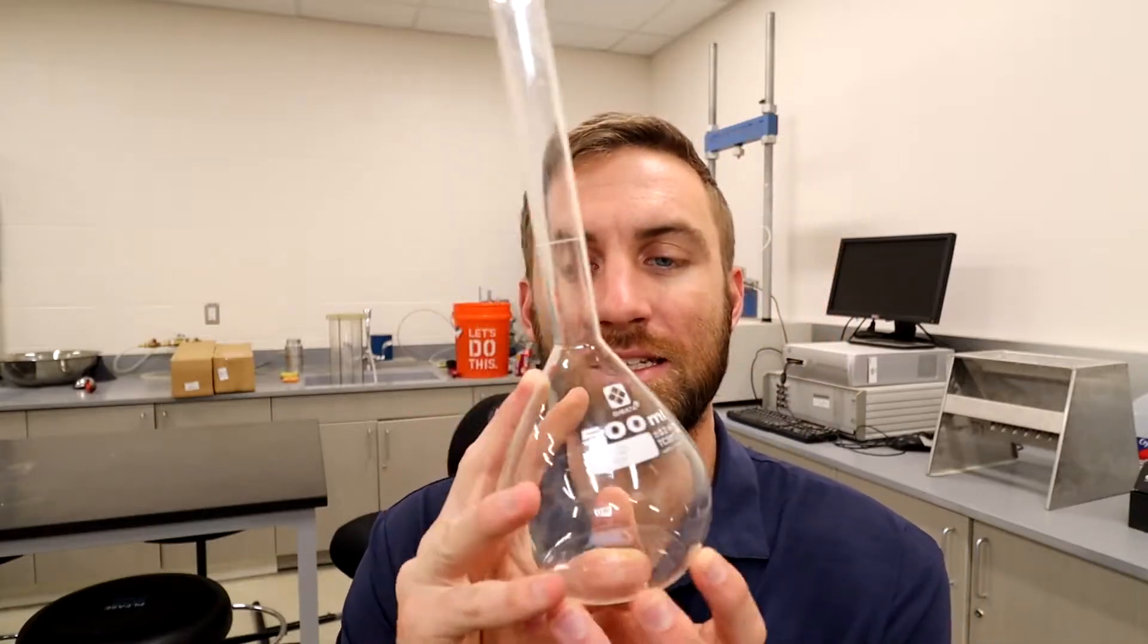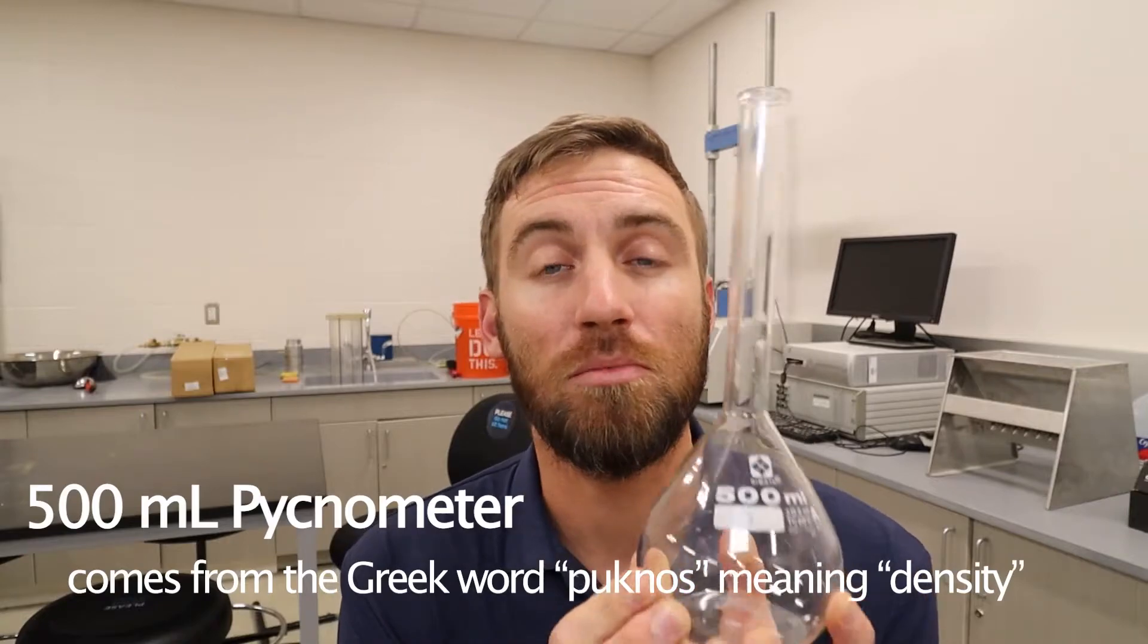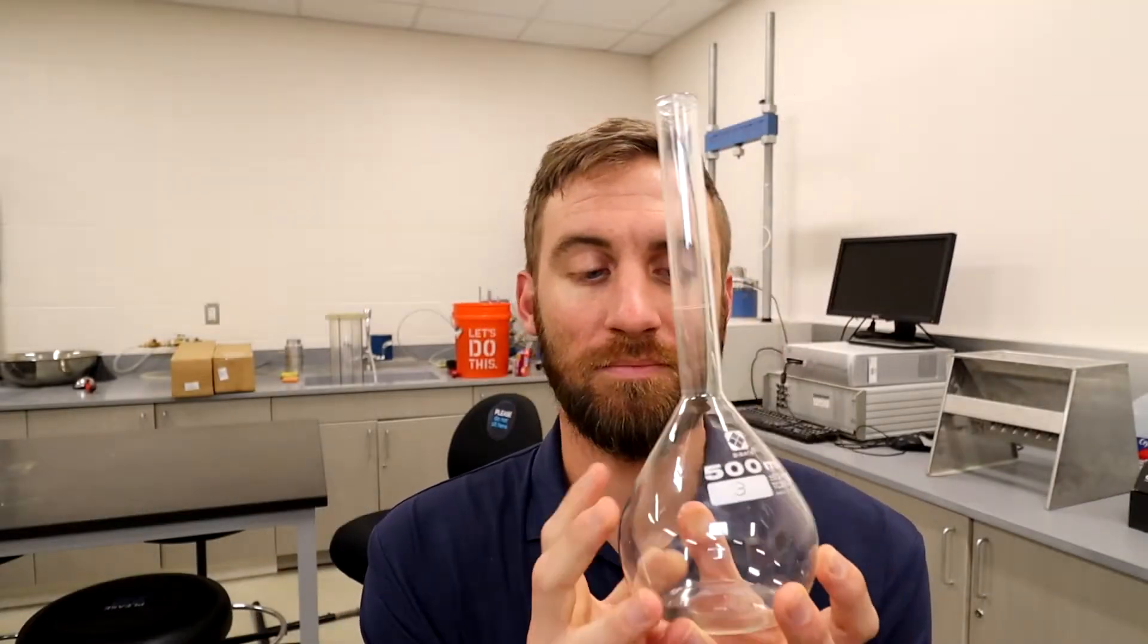We're going to be using what's called a pycnometer. It's this fancy little bulb shaped glass that allows us to pull a vacuum and remove all the air bubbles from the soil specimen. Hope this helps illustrate some of the background tests that are performed to get you the values that you use in your lecture class and that we'll ultimately use in geotechnical engineering, design, and foundation analysis.